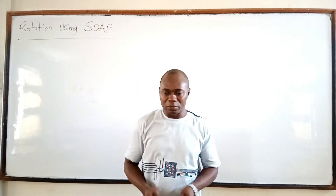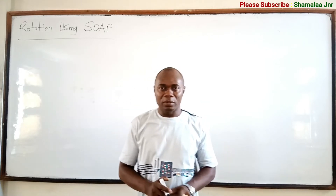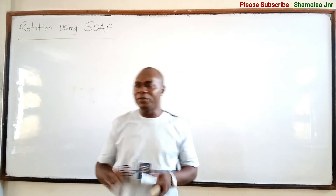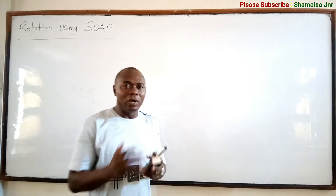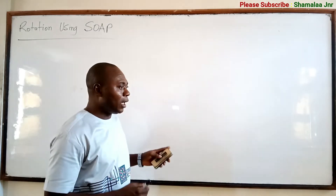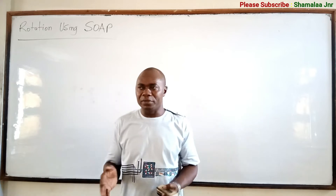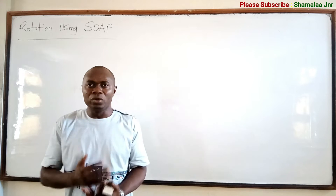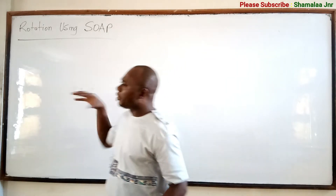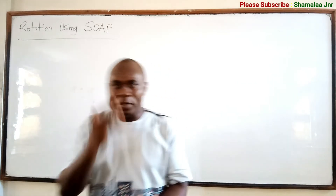Hello viewers, you are welcome to this video. Today I want us to look at how you can use a method known as SOAP to do rotation. I have a video on rotation where I came out with a game that could help us derive formulas to do rotations. All those rotations were done through given angles about the origin — both clockwise and anticlockwise. So today I want us to look at a situation where rotations are done through given angles but not about the origin.